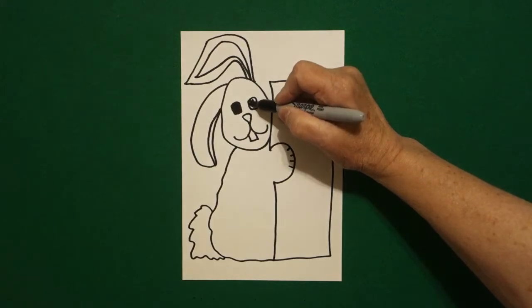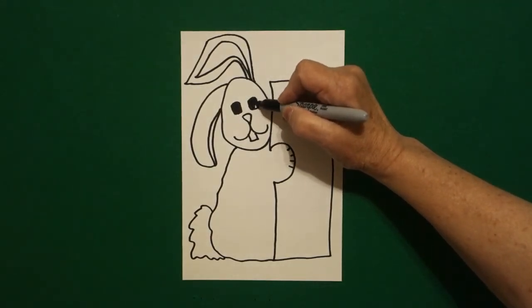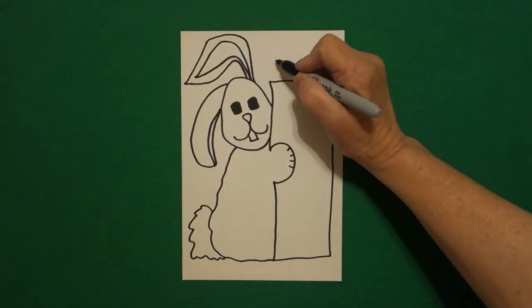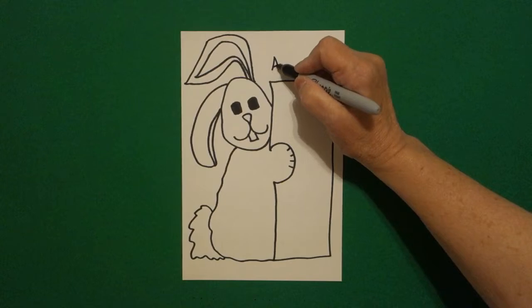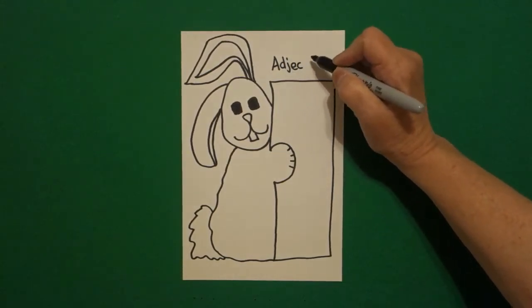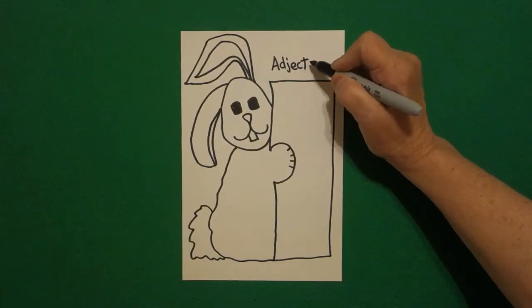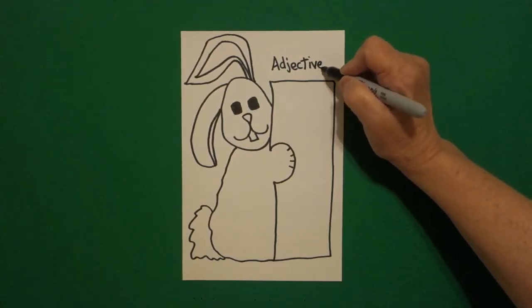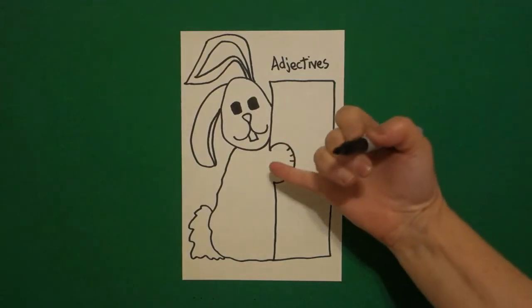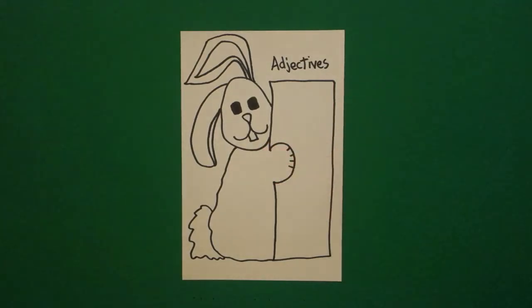Now, this bunny or this rabbit, you can call them either way, we're going to describe it using adjectives. A-D-J-E-C-T-I-V-E-S. And what does that mean? It means that we're going to use words that describe the bunny.